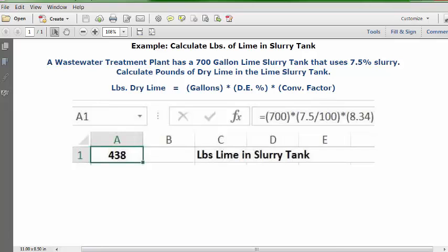Go to the formula bar and type in this formula: equal sign, open parentheses, 700, close parentheses, multiplication key, open parentheses, 7.5, division key, 100, close parentheses, multiplication key, open parentheses, 8.34.